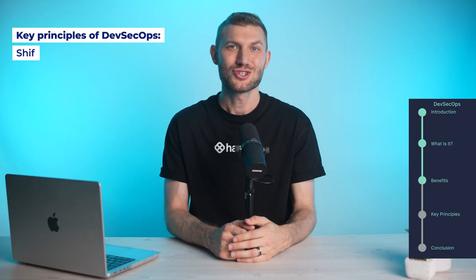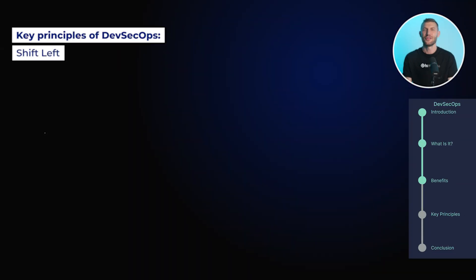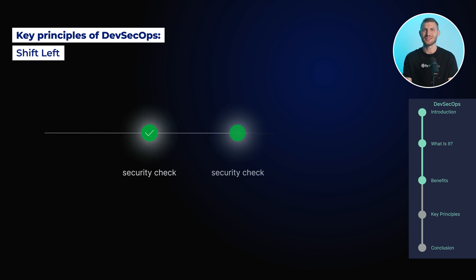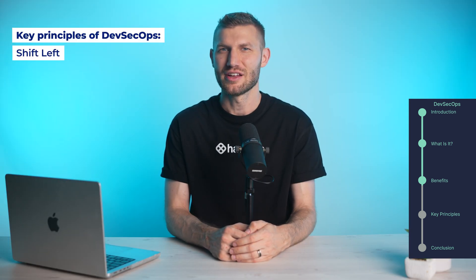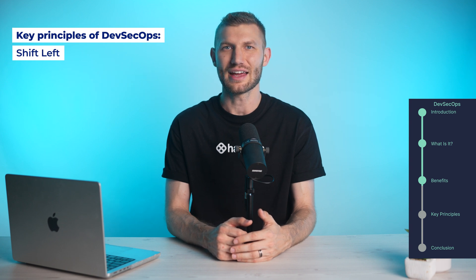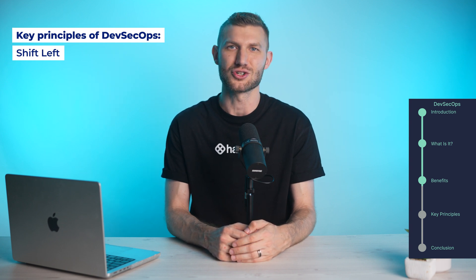Here are the key principles of DevSecOps. Shift left: this principle emphasizes addressing security concerns as early in the development process as possible. By integrating security practices into the initial stages, potential vulnerabilities can be identified and mitigated before they become major issues.